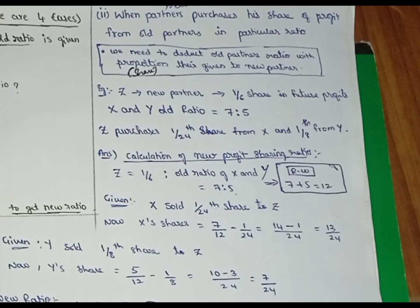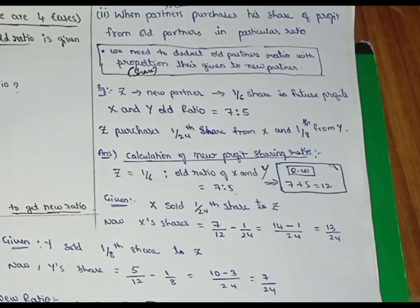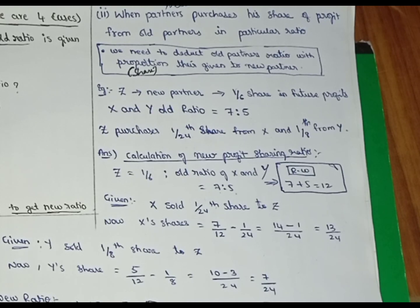In case 2, X gives 1 by 24th share to Z and Y gives 1 by 8th share to Z. So X's sacrifice is 1 by 24 of profit and Y's sacrifice is 1 by 8 of profit. Z's share is 1 by 24 plus 1 by 8, and if you calculate this, you get 1 by 6. The old ratio of X and Y is 7 is to 5.